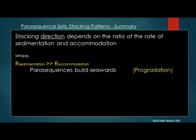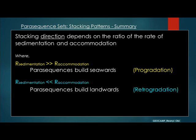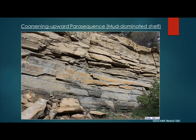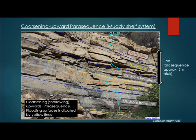Stacking direction depends on the ratio of the rate of sedimentation to that of accommodation. We have progradational stacking when the rate of sedimentation is much greater than the rate of accommodation, so parasequences build out seaward. When the reverse is true — sedimentation rate is less than accommodation — we have retrogradation, with parasequences building landward. When there is a balance between sedimentation and accommodation rates, we have aggradational stacking, where the shoreline moves neither seaward nor landward.